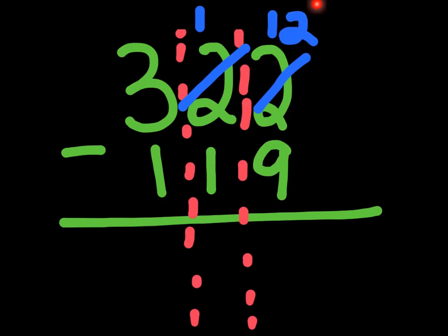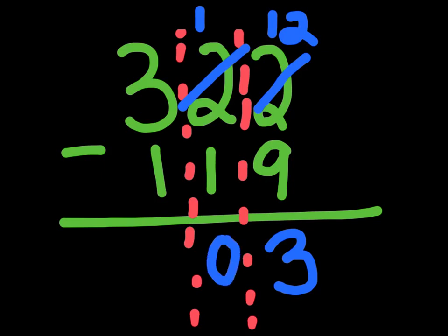Now our right hand subtraction is 12 minus nine, and 12 minus nine is three. Now the middle column is one minus one, which is zero. Then the left hand column is three minus one, which is two. So our answer to 322 minus 119 is 203.